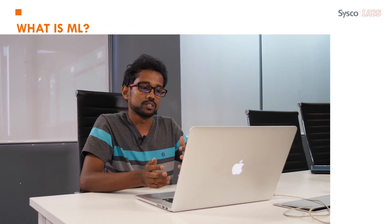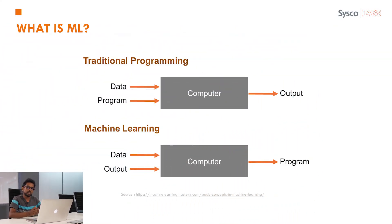Let's first understand what is machine learning and how it differs from traditional programming. In traditional programming we have data as inputs and we have a set of outputs, and we write a program to convert those inputs to outputs. For example, consider a calculator program — we know the corresponding outputs for those inputs, so we can code a program to convert them.